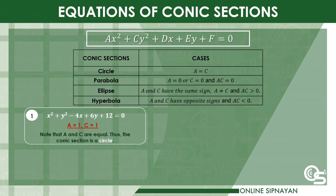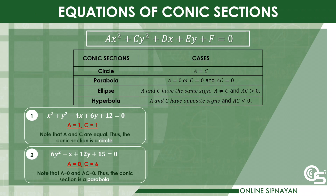Example 1: x² + y² − 4x + 6y + 12 = 0, where a = 1 and c = 1. Since a and c are equal, the conic section is a circle. Example 2: 6y² − x + 12y + 15 = 0. There is no x² term, so a = 0 and c = 6. Since a = 0 and ac = 0, the conic section is a parabola.